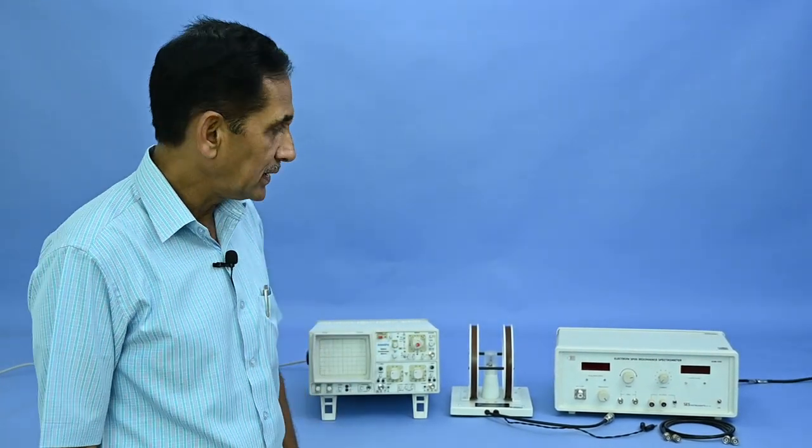ESR105 consists of two parts: the ESR105 unit and Helmholtz coil.